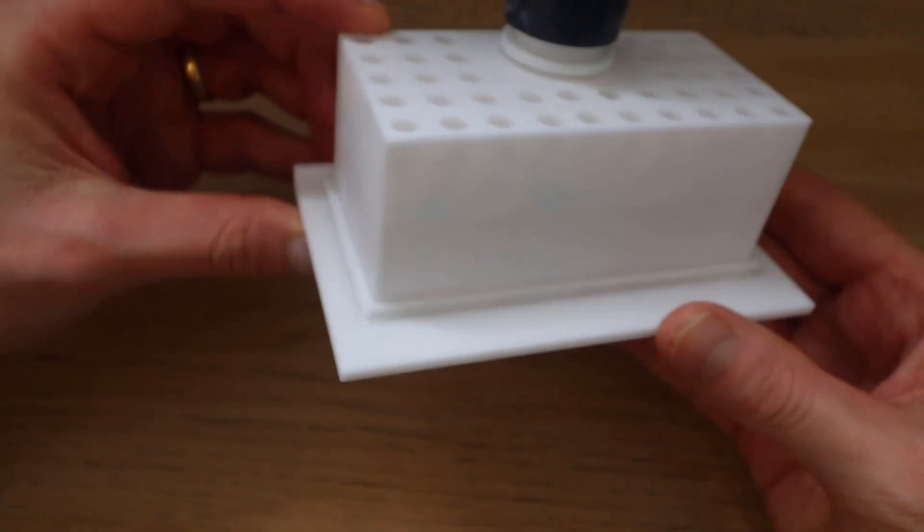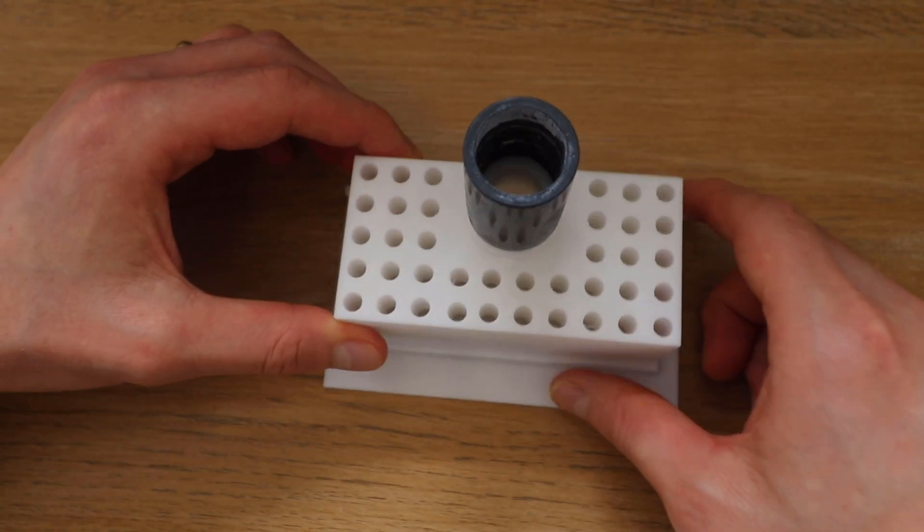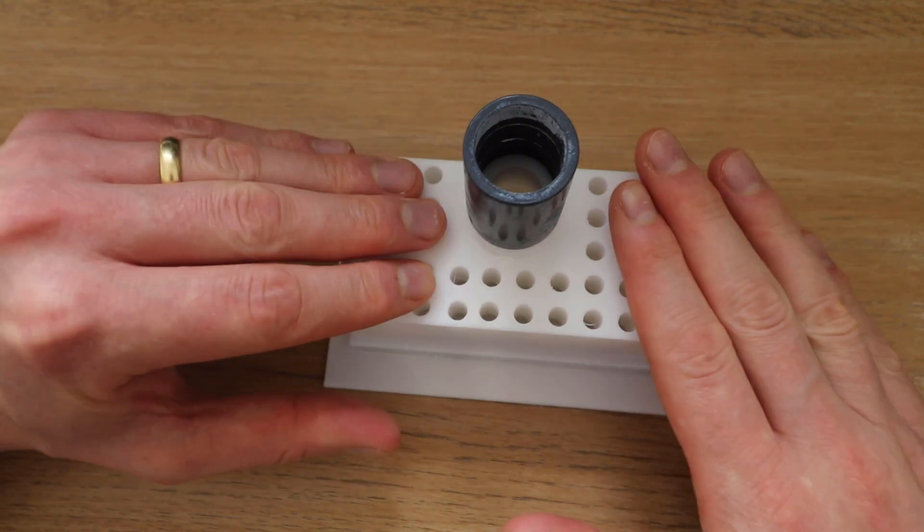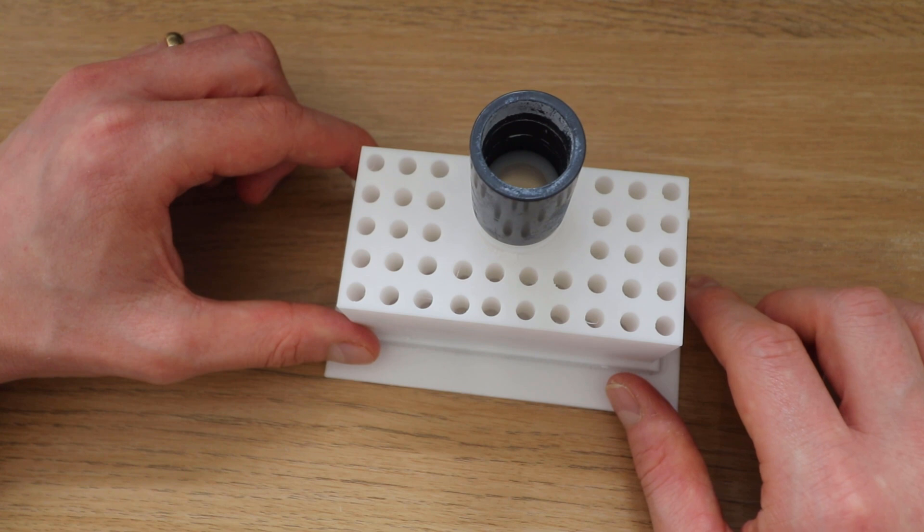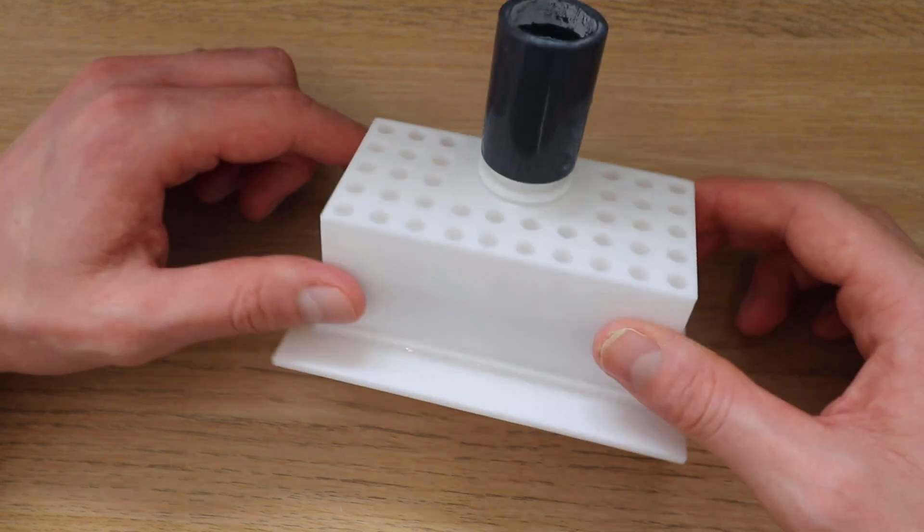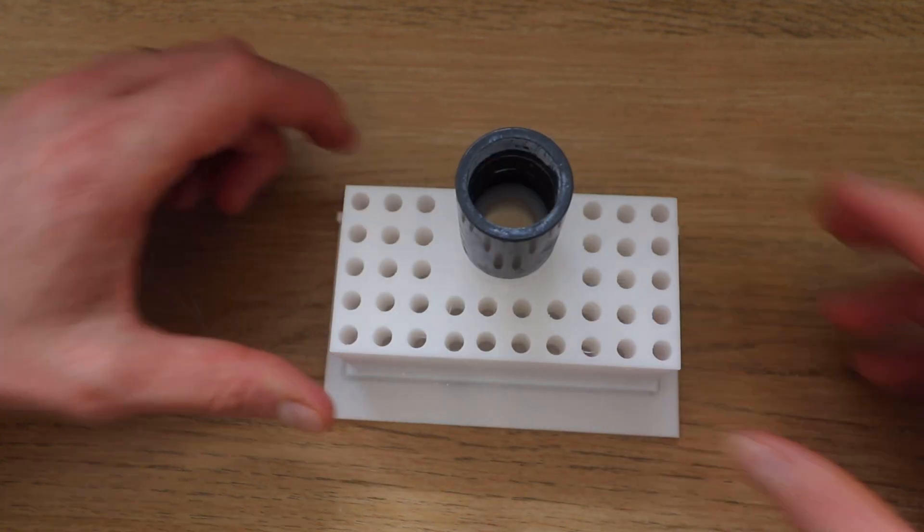So hopefully if the superglue holds, that will mean that there's absolutely nowhere for the water to go apart from to be pushed through the flow straighteners, and that should give us a nice stable flow. So all that's left to do now is to just silicon this into the rig.